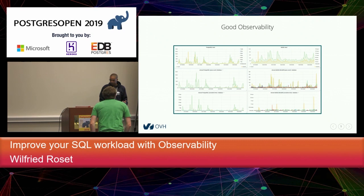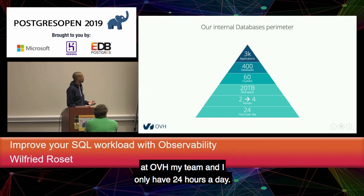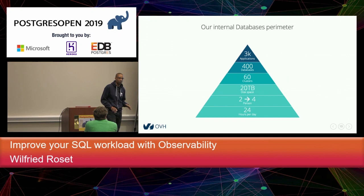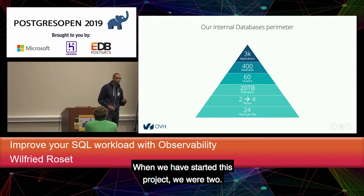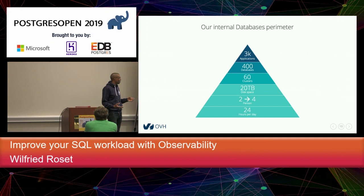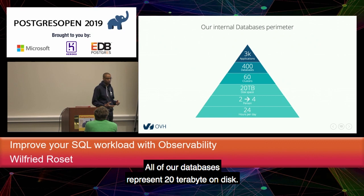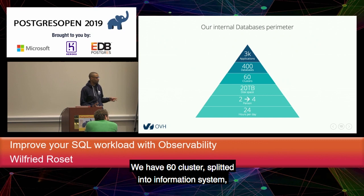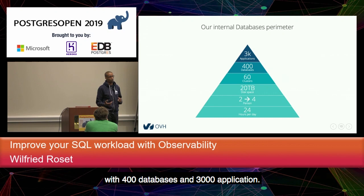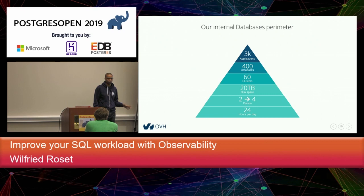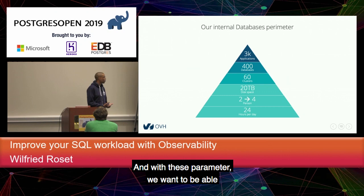To give you a bit of context: at OVH my team and I only have 24 hours a day — basically just like you. When we started this project, we were two. We are now four and looking to grow the team. All of our databases represent 20 terabytes on disk. We have 60 clusters split into two information systems with 400 databases and 3,000 applications.